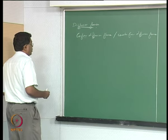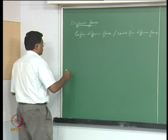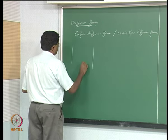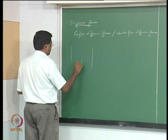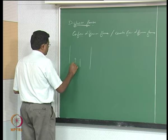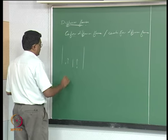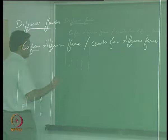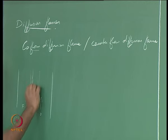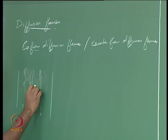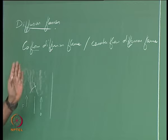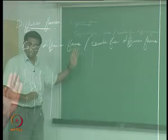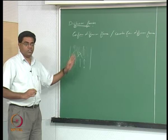A typical co-flow diffusion flame configuration uses a duct with a splitter plate: fuel on one side, oxidizer on the other. The splitter plate terminates at its lip, creating a mixing region downstream. As the flow goes upward, the fuel and oxidizer mix with each other, and somewhere in that mixing region a flame occurs because that is where they mix.